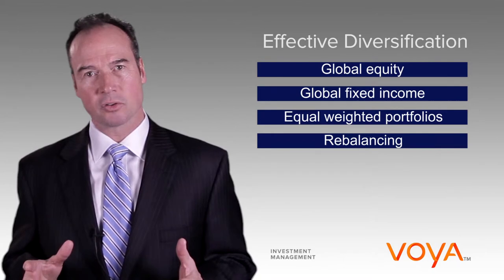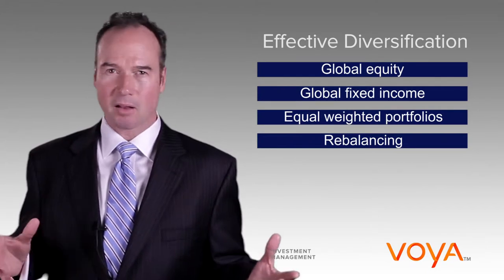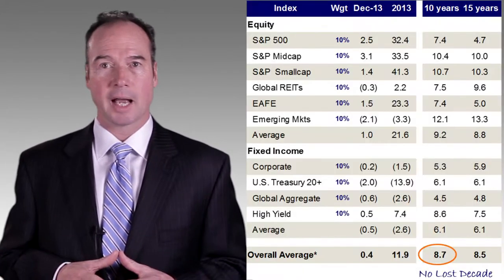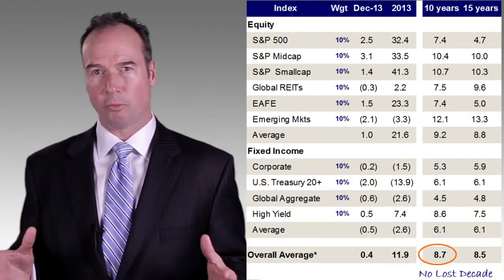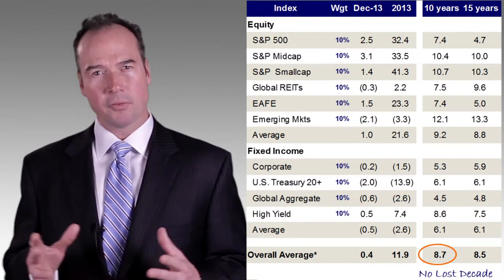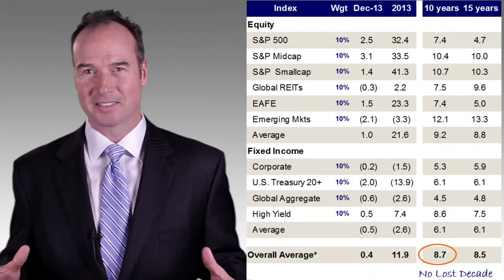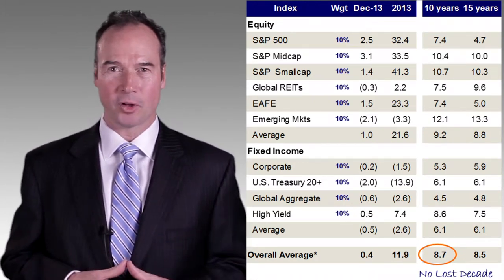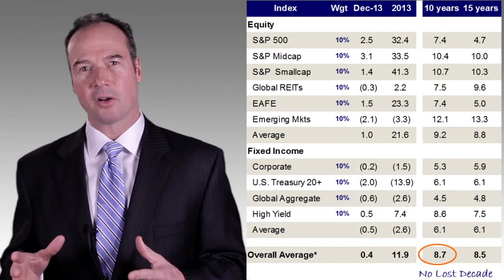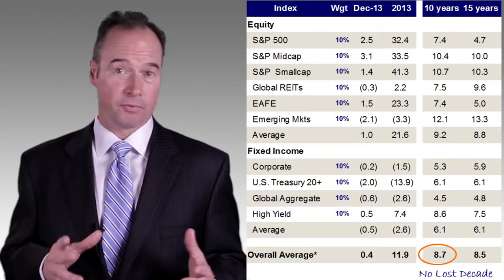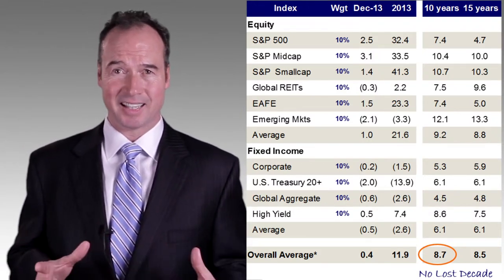Following these principles for building effectively diversified portfolios has proven to be fairly effective. Looking at performance over the past 10 years using a typical 60% equity, 40% fixed income allocation, a few observations jump out. First, there's no lost decade here. The 60-40 portfolio generated a gross return over 8%, which is better than U.S. large cap equity or fixed income only allocation, and with nearly one third less risk than the equity market.